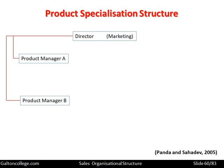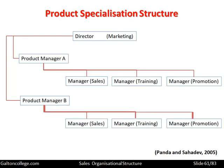In the product specialization diagram, the Director of Marketing oversees Product A and Product B. Under Product A we have the Sales Manager for Product A, and under Product B we have the Sales Manager for Product B — a very straightforward structure. The company makes two products and there are two teams dedicated to selling those products.